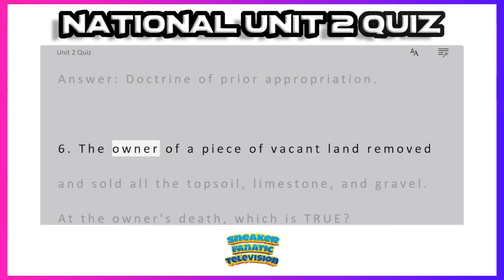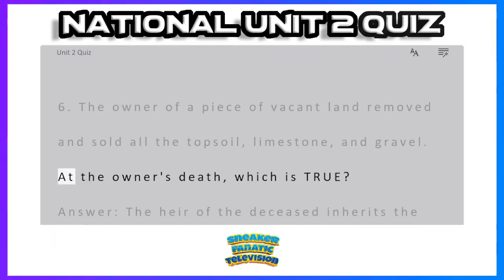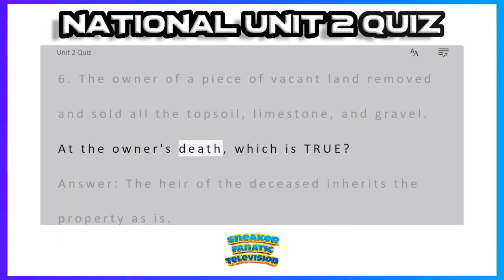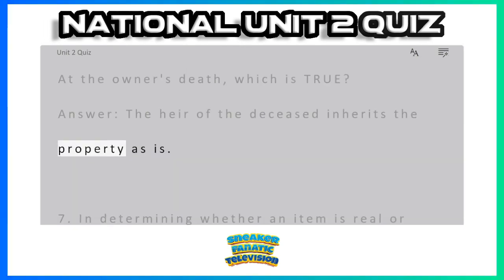Question 6: The owner of a piece of vacant land removed and sold all the topsoil, limestone, and gravel. At the owner's death, which is true? Answer: The heir of the deceased inherits the property as is.